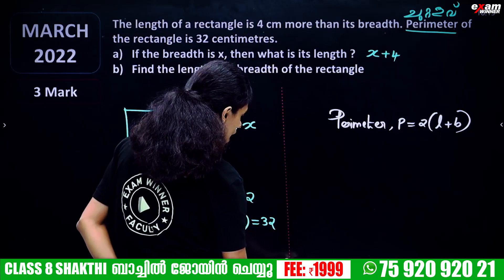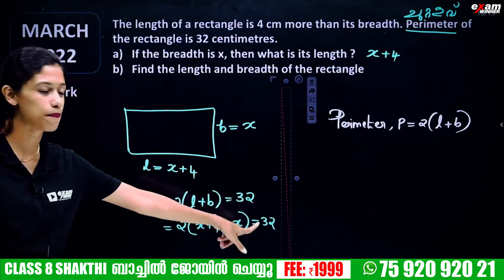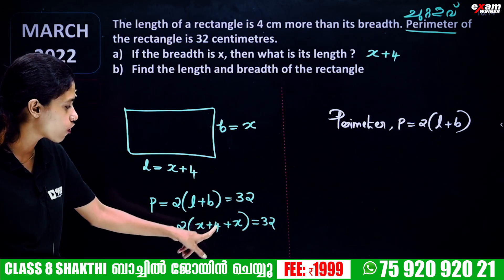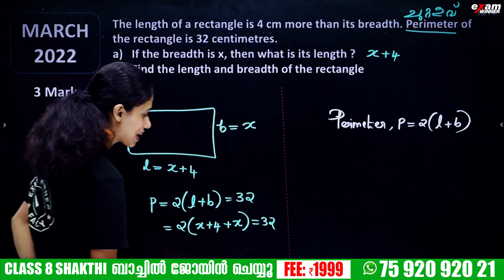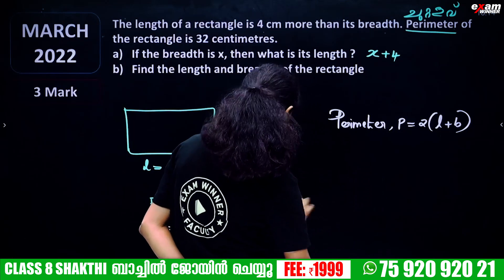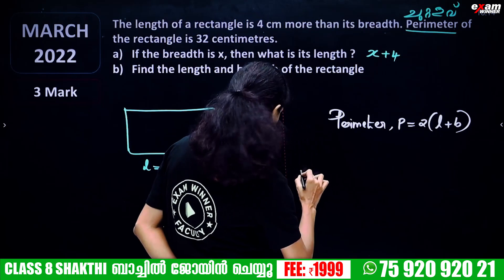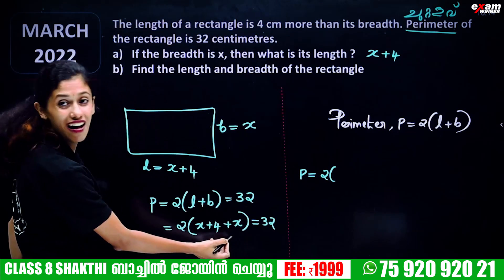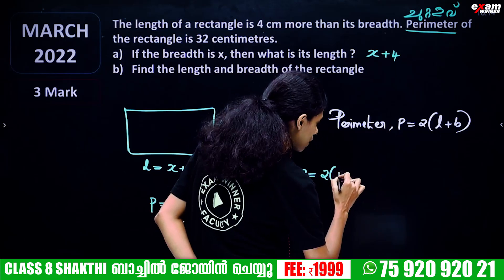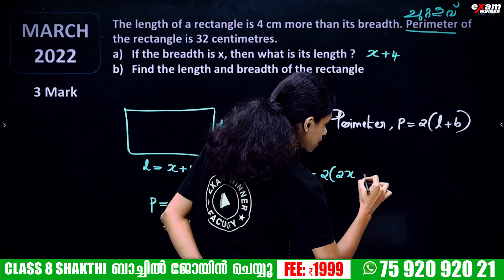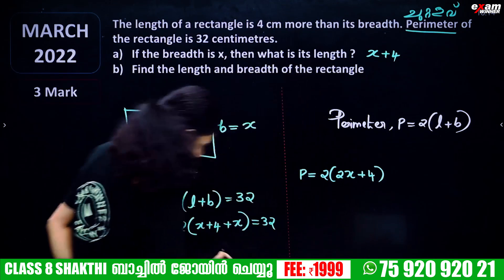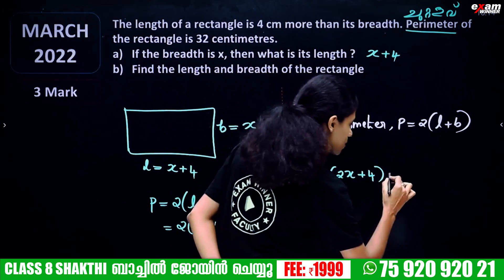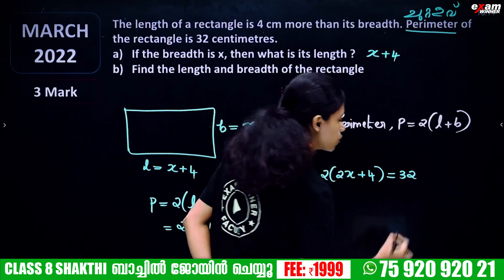We add x plus 4 plus x. We will add and get 2x plus 4. So 2 into 2x plus 4 is equal to 32.